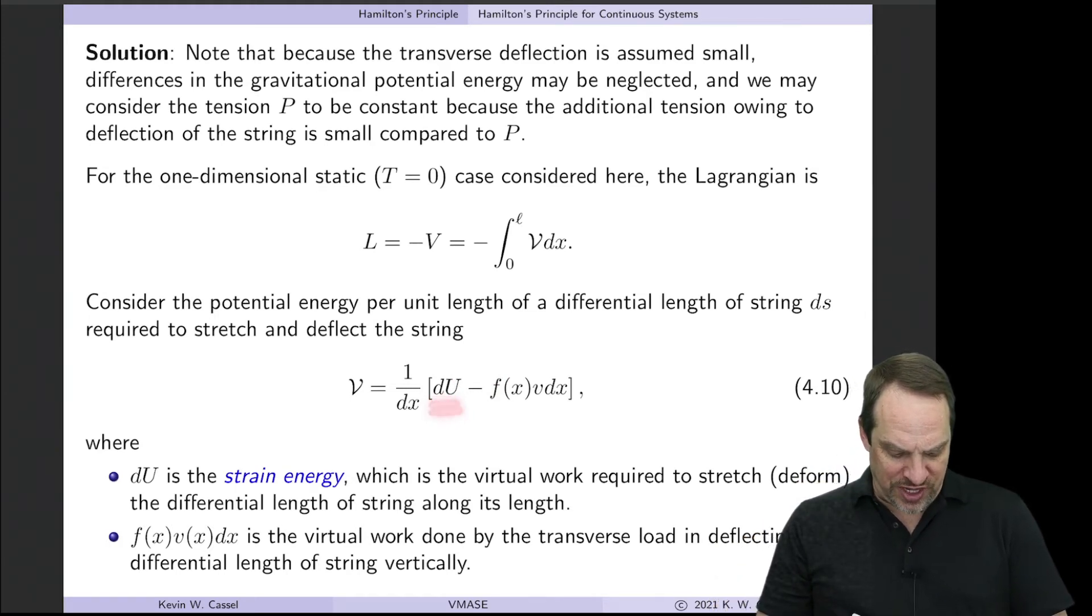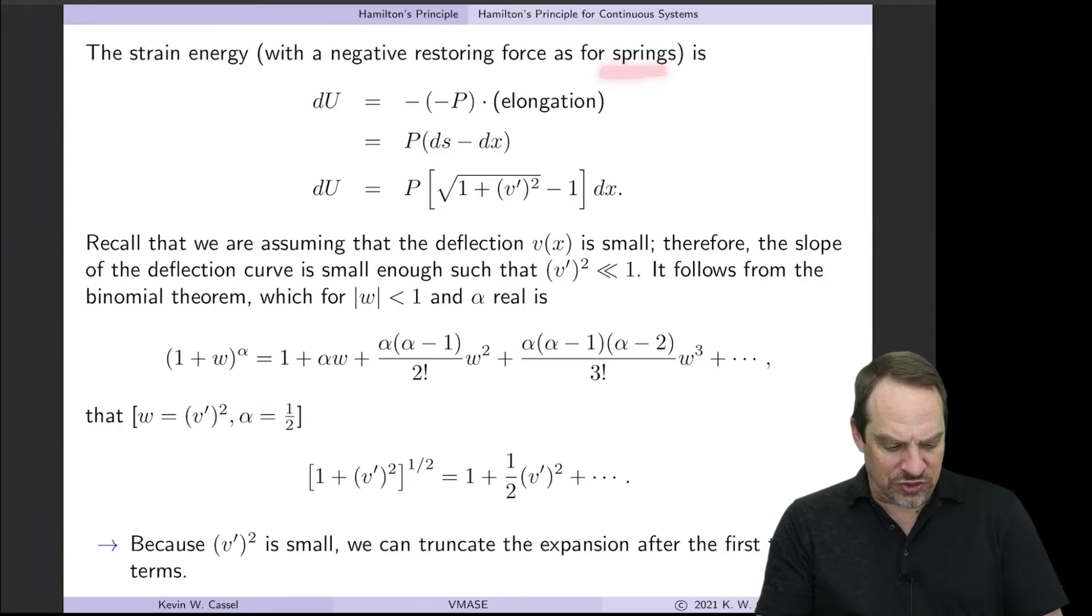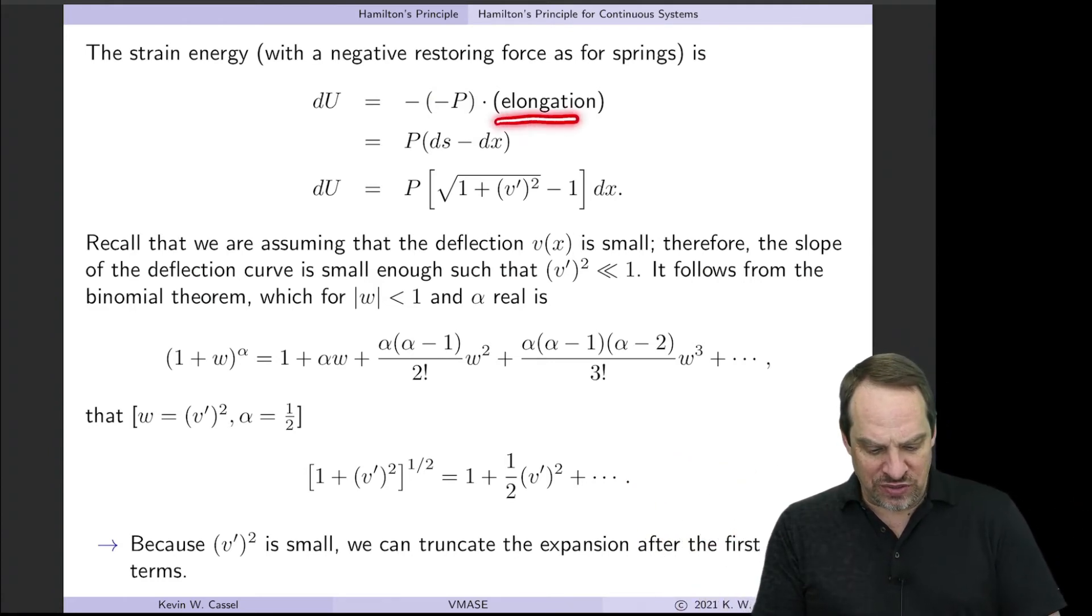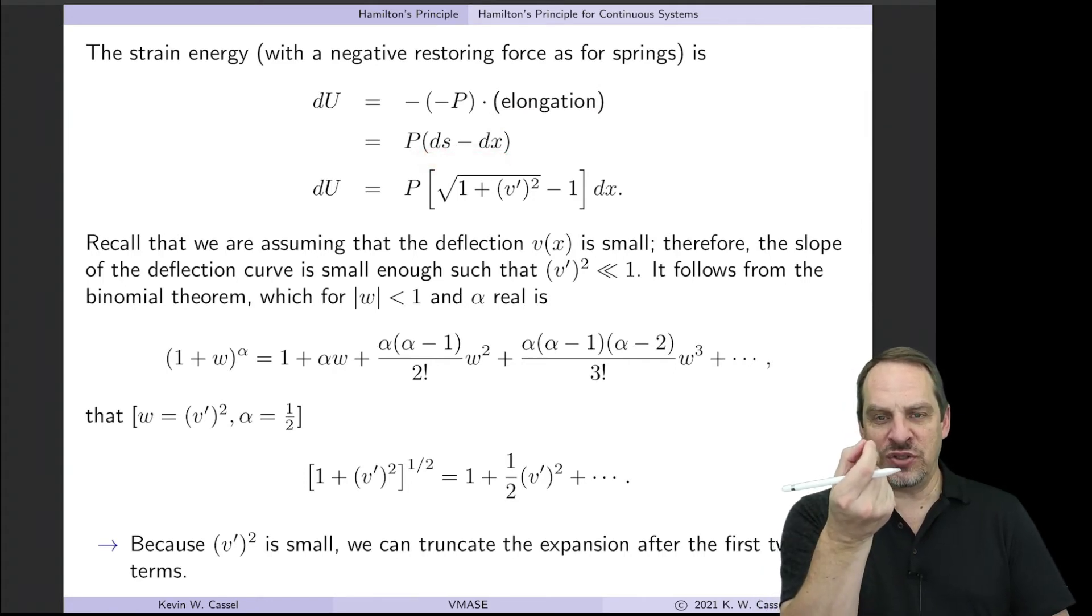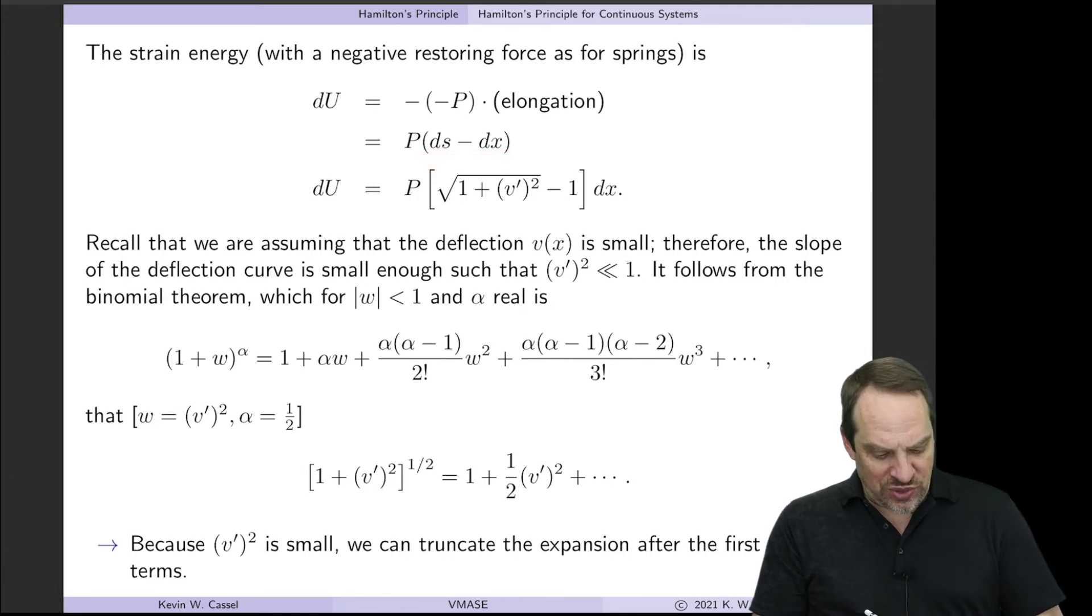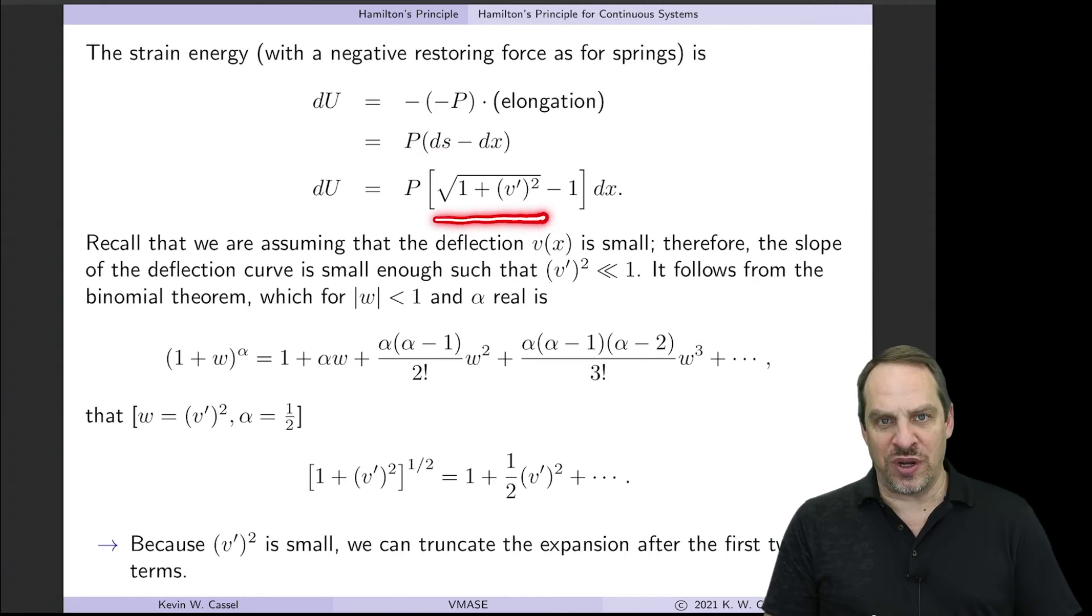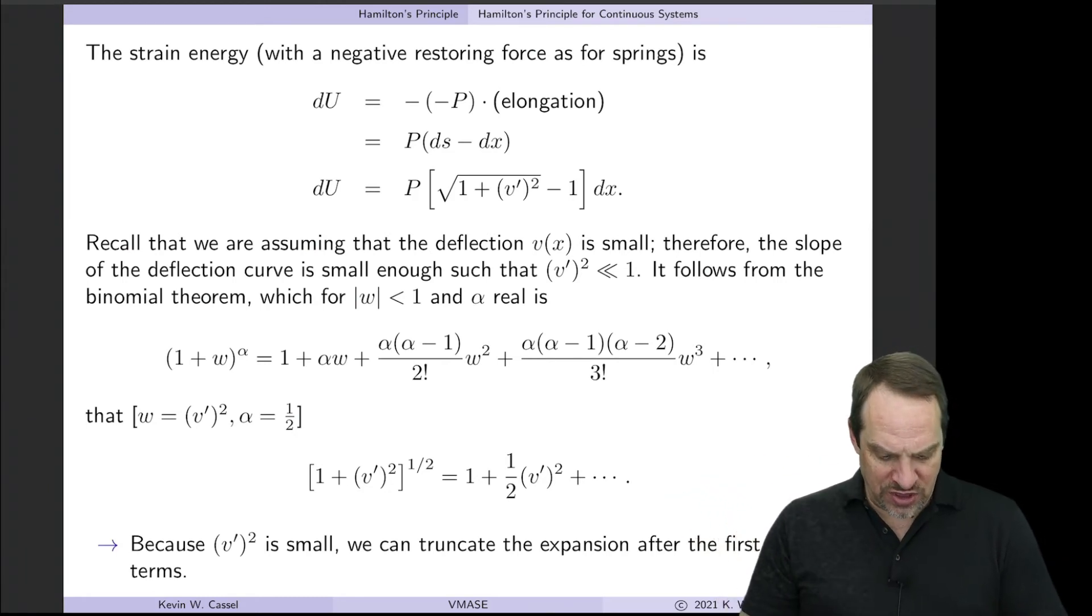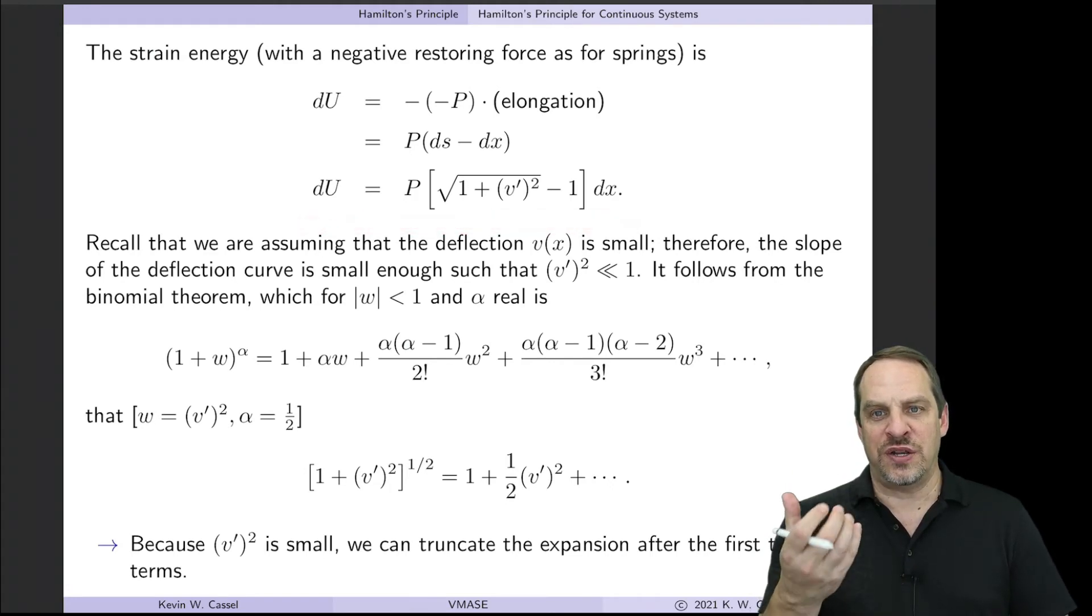So let's think about this dU, the strain energy. Just like a spring, the strain energy is the negative of the restoring force times the elongation. The restoring force here is just minus P. So we're pulling in tension of P, so the restoring force is minus P. The elongation is dS minus dX. This is the elongation for each little infinitesimal segment of the string. Its original length was dX, and its stretched length is dS. So the elongation is dS minus dX. Now we've seen dS before. It's just the square root of 1 plus V prime squared. And then that's minus 1 all times dX. So this is an expression for the strain energy in the string, due to the fact that it's under tension.